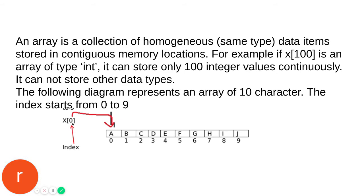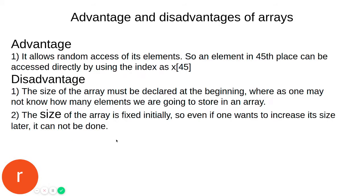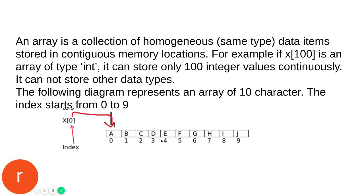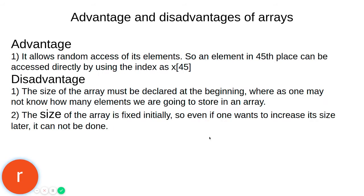The advantages of an array: it allows random access of its elements. For example, if I want to access x[4], I can directly access it. Similarly, x[7] can be accessed directly. That is the main advantage—random and immediate access.